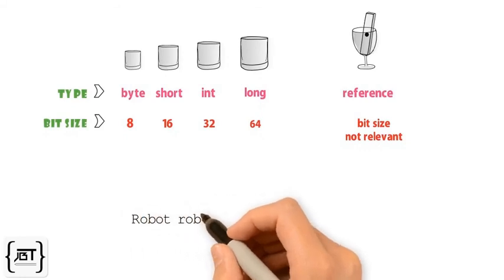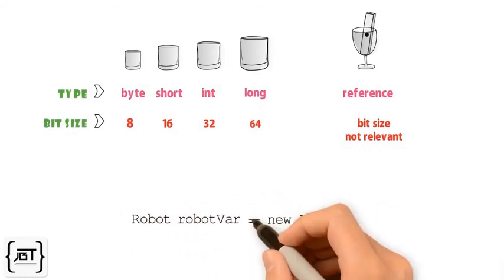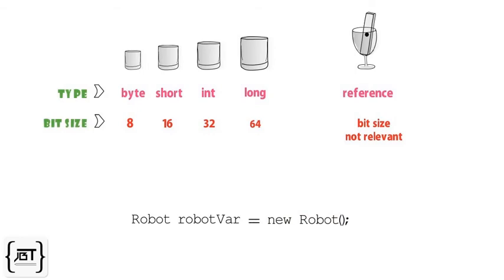Let us now revisit the steps of object declaration, creation, and assignment. The statement first declares a reference variable, then allocates space for a new robot object in memory, and then assigns the robot object to the reference variable, RobotVar.